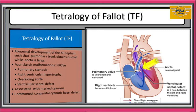Fourth: ventricular septal defect. The mnemonic PROV can be helpful. Tetralogy of Fallot is associated clinically with marked cyanosis as a result of right to left shunting of blood. The clinical consequence depends primarily on the severity of pulmonary stenosis. This defect is the commonest congenital cyanotic heart defect.